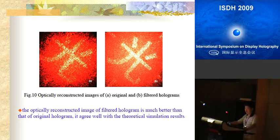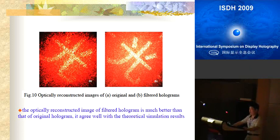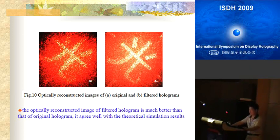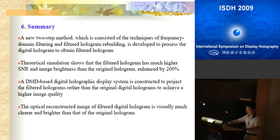Figure 11 gives the experimental results of the optical reconstructed image using our DMD-based projection system. Image A is the optical reconstructed image of the original digital hologram, and B is the optical reconstructed image of the filtered hologram. The experiment shows the optical reconstructed image of the filtered hologram is much better than that of the original hologram, which agrees well with the theoretical simulation.